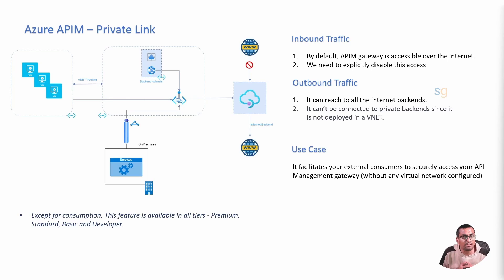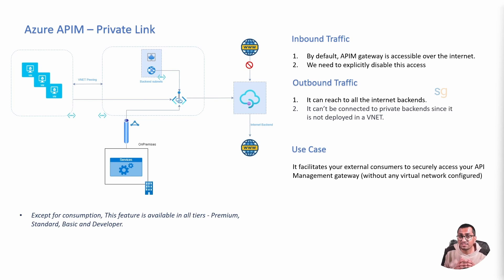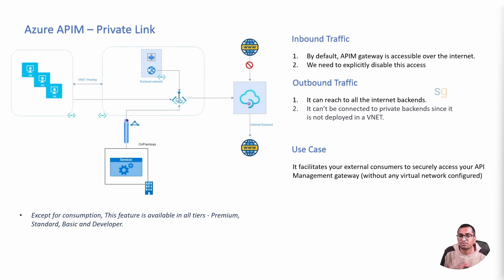For inbound traffic with private endpoints, by default the Azure API Management gateway is accessible over the internet when you enable a private endpoint — you need to explicitly disable this access. For outbound traffic, it can reach all internet backends, but it cannot connect to private backends since it is not deployed within a VNet. It facilitates external consumers to securely access your API Management gateway. You can create a private endpoint for the gateway and place it in an external consumer's virtual network. Private endpoints can be reached from the same VNet, regionally peered VNets, globally peered VNets, and also cross-tenants.